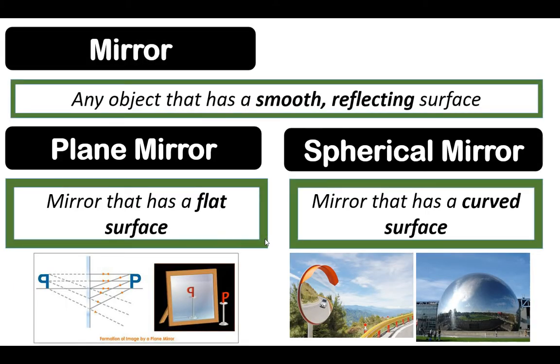A mirror is any object that has a smooth reflecting surface. We have two types of mirror: first is plane mirror, a mirror that has a flat surface, and spherical mirror which has a curved surface. We have two types of spherical mirror: first is convex, second is concave mirrors.